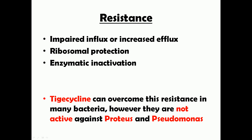Tigecycline, the parenteral antibiotic given intravenously, can overcome resistance in many bacteria such as Staph aureus. However, it is not active against Proteus and Pseudomonas aeruginosa, because these organisms produce multi-drug resistant efflux pumps that expel various antibiotics — not just tetracyclines — making these bacteria very difficult to treat.